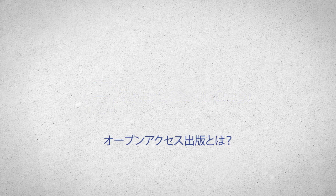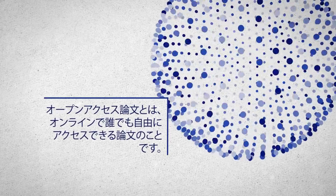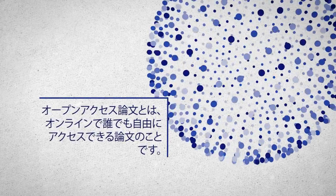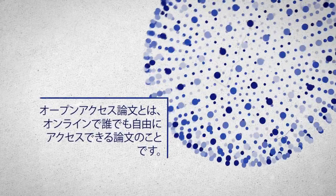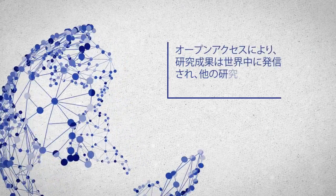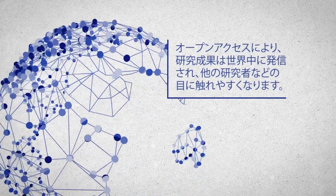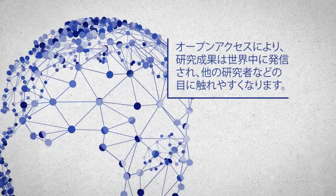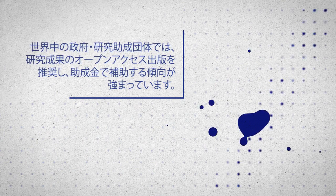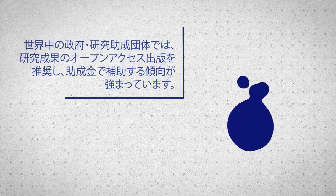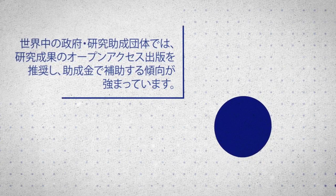What is open access publishing? Open access articles are those which are freely available online to everyone. It offers global circulation and high visibility of research. Governments and research funders worldwide are increasingly encouraging open access publication for grant-funded research.